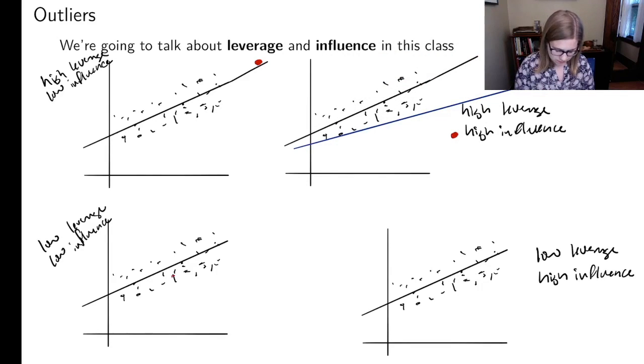A point that would be low leverage and low influence would be something like this, right in among that cloud of points and not doing anything to the regression line. And then for low leverage, but high influence, I could have a point like this. It's within the range of the data, but it also might pull the line in a particular way. So maybe with just the black dots, I would have the black regression line. But if I added in that red one, maybe I would get a slightly different regression line.